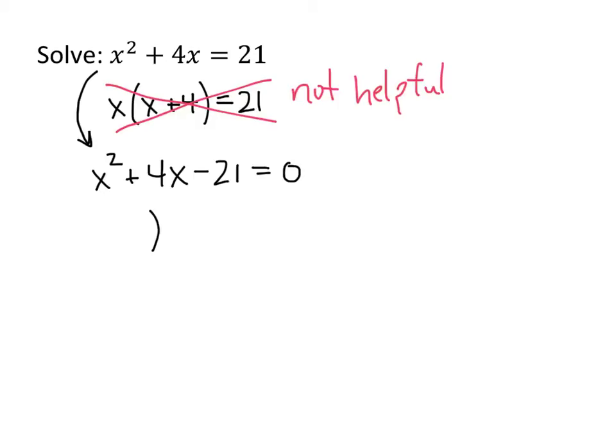So now if we try to factor the left-hand side, let's see what we get. We're looking for two numbers that multiply together to be negative 21 and add together to be positive 4. And a little trial and error would tell us that what we get is x plus 7 and x minus 3.